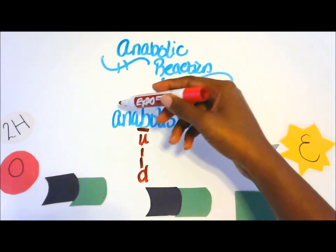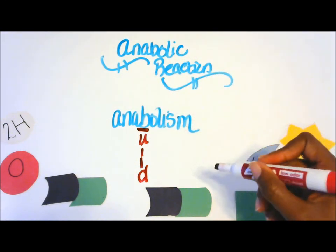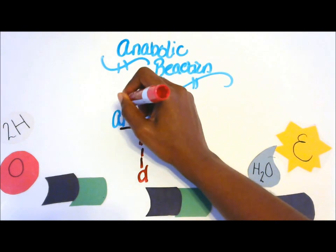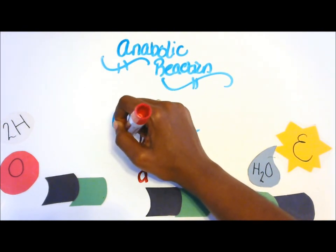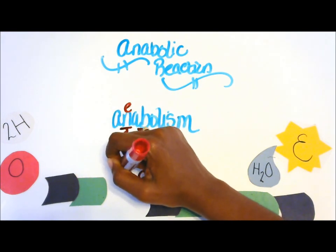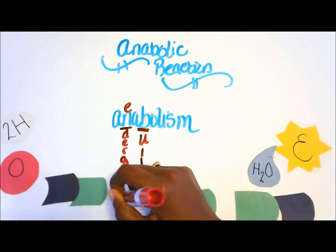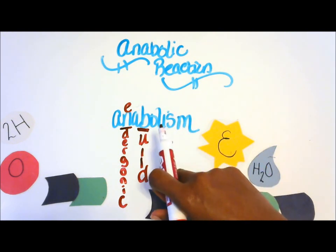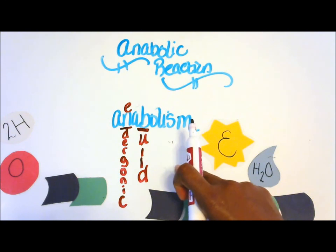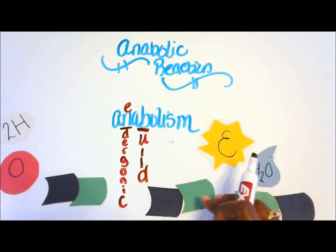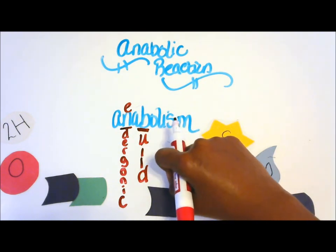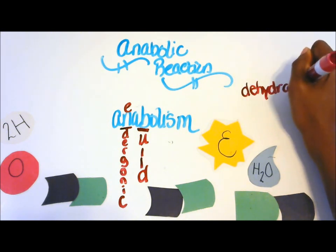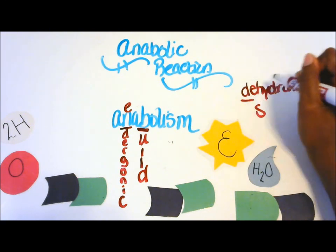Because anabolism builds simpler molecules into larger complex molecules, I'm going to use the 'N' for endergonic — so energy is needed in anabolism. Anabolism is the building of large complex molecules from simpler smaller molecules. In anabolism there is dehydration synthesis, which is the release of water.